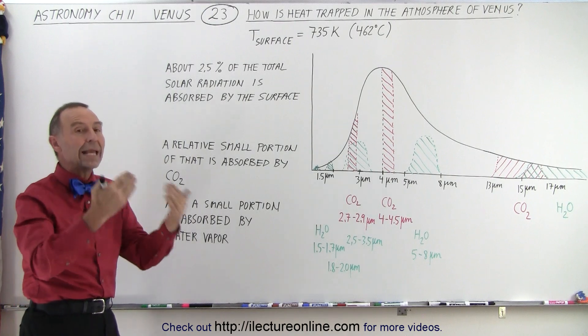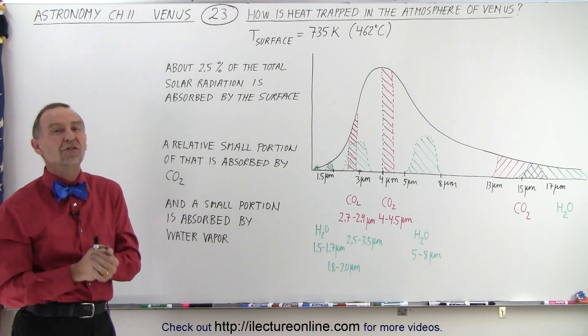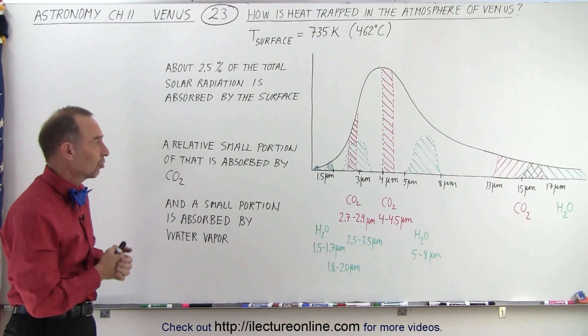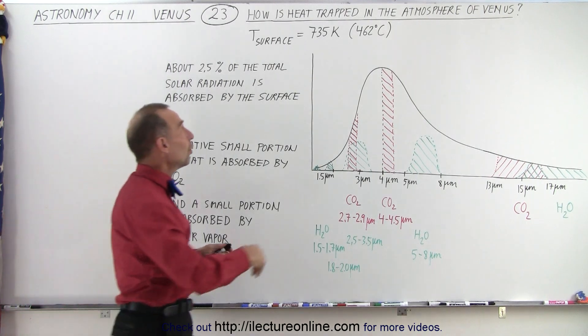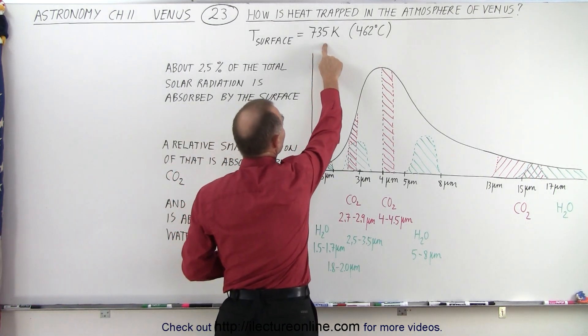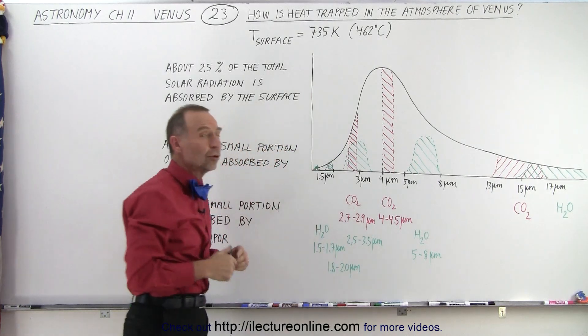It's absorbed and then re-radiated at a rate of about 160 watts per square meter from the surface. Now, since the surface is so hot, about 735 K or 462 degrees Celsius,